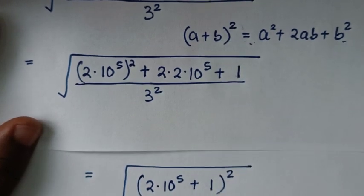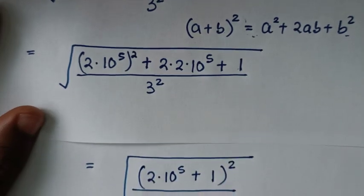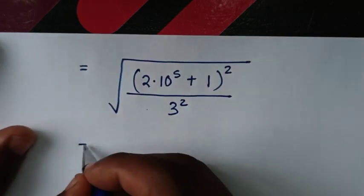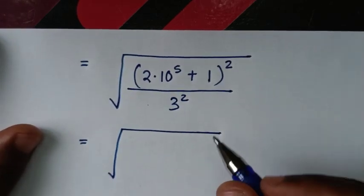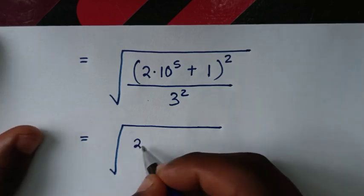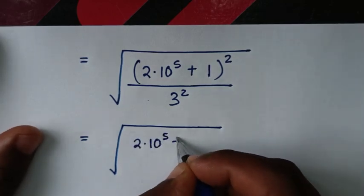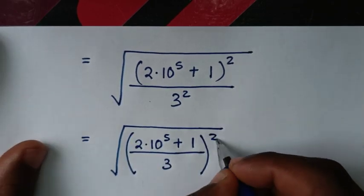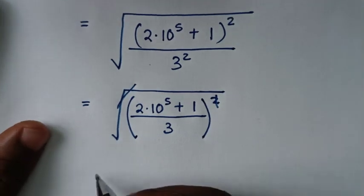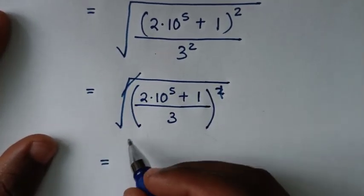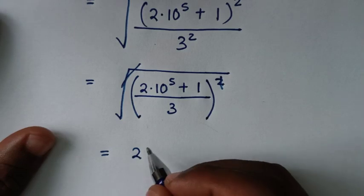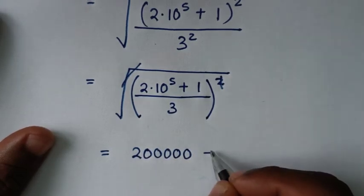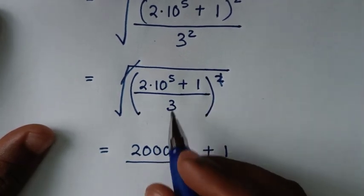So we apply this form: it will be the square root of (2 times 10 to the power 5 plus 1) squared over 3 squared. In the next step, the square root cancels the square, leaving (2 times 10 to the power 5 plus 1) over 3, which is 200001 over 3.